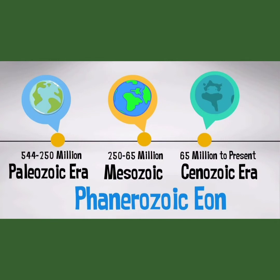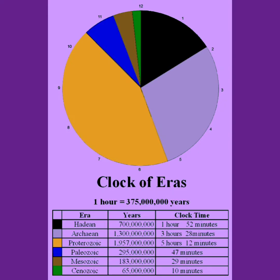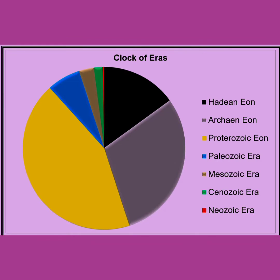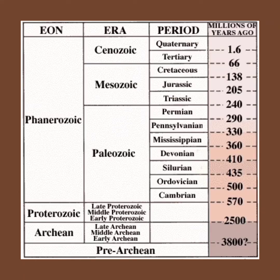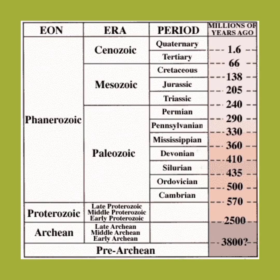The three Eras are the Paleozoic Era, Mesozoic Era, and Cenozoic Era. Just as Eons are subdivided into Eras, Eras are subdivided into units of time called Periods. The Paleozoic Era is divided into six periods — from oldest to youngest: Cambrian, Ordovician, Silurian, Devonian, Carboniferous, and Permian.